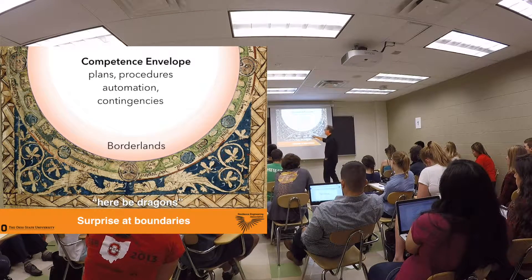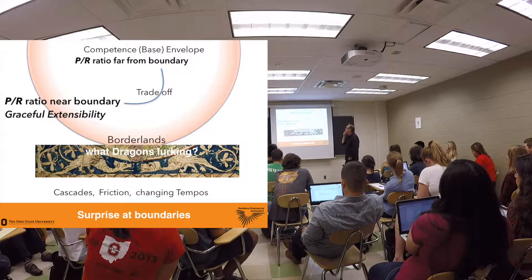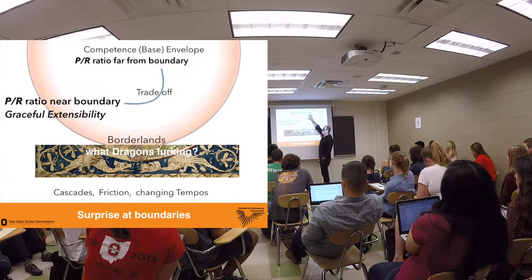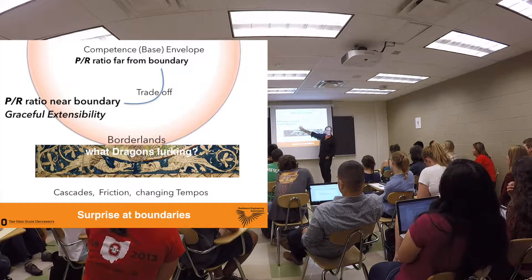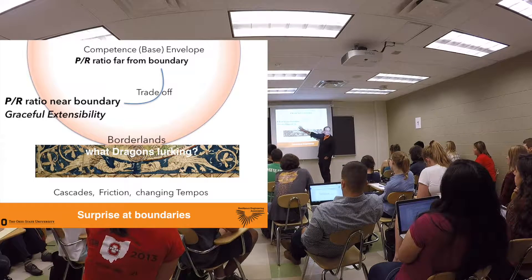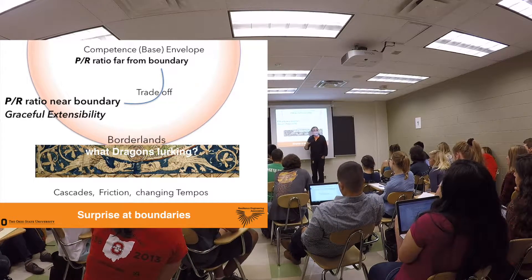So what we end up with is two kinds of capabilities: our base or competence envelope — far from saturation, far from running out of our adaptive range — and our capacity for maneuver, when we're risking saturation. And we have another property of what happens when we're near the boundary: that's graceful extensibility. Can I extend performance as I approach boundaries?